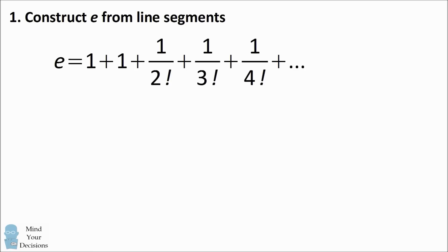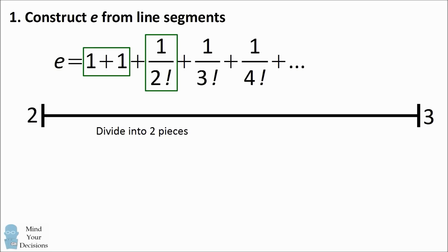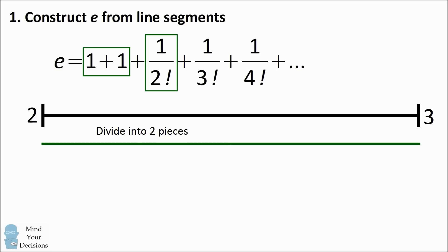We'll construct E from line segments using the infinite series. The first two terms are 1 plus 1, so we have a line segment which starts at 2. We then want to add 1 over 2 factorial. We can do this by considering a line segment of length 1 going from 2 to 3, dividing it into two pieces, and keeping the second piece to add 1 half. This gets us closer to E.